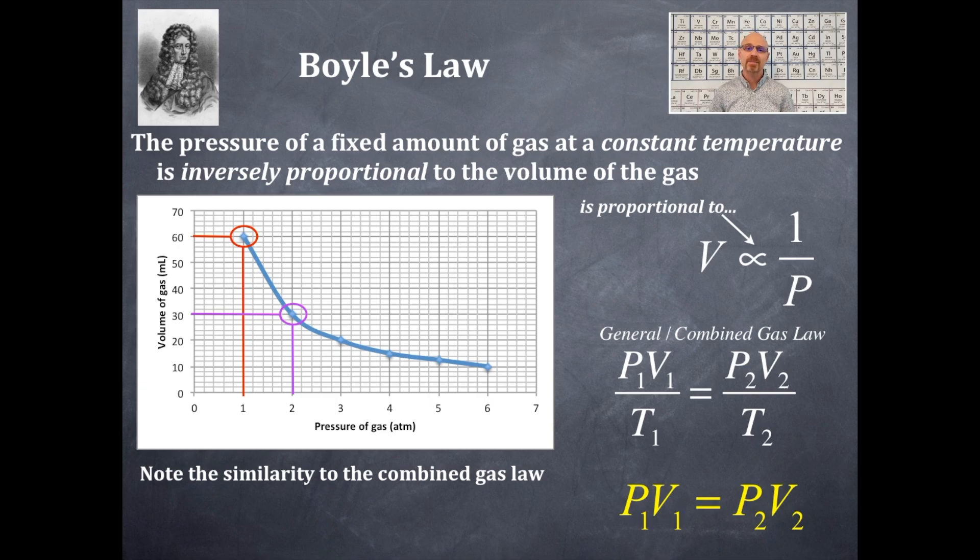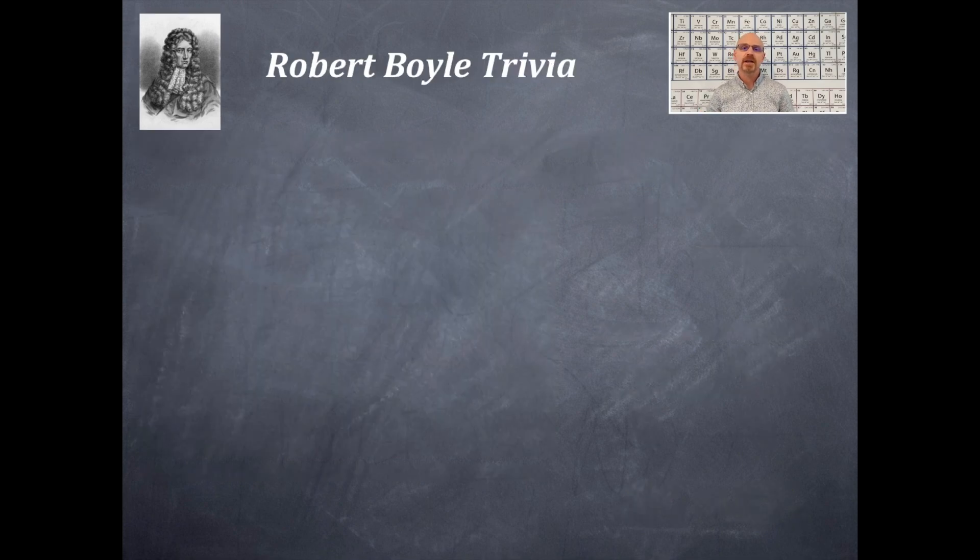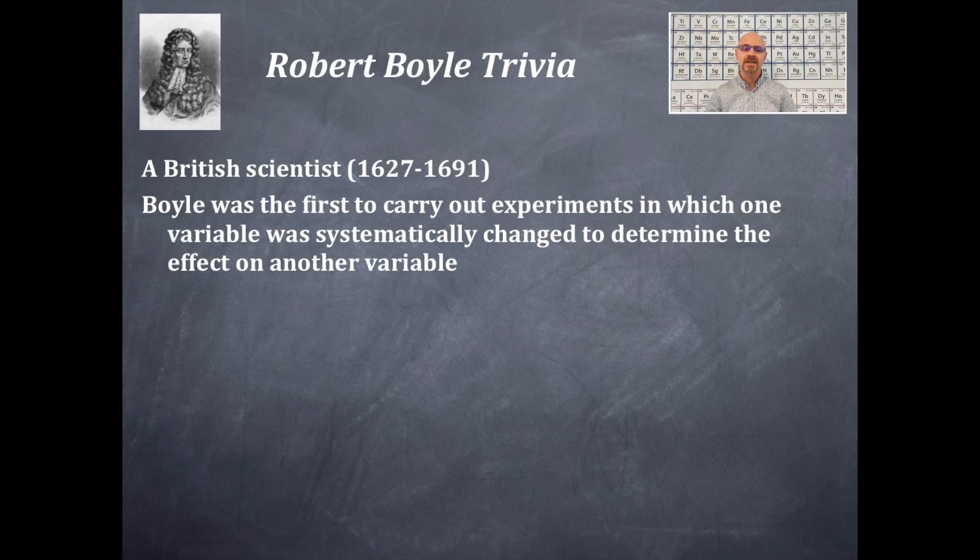That way you can derive the equation for Boyle's Law. If it's constant temperature, you can put the temperature values in there if you wanted to. Just recall that the temperature must be in Kelvin. So we're still not done with Boyle's Law. Here's a little bit of Boyle's Law trivia. He was a British scientist. Boyle was the first to carry out experiments in which one variable was systematically changed in order to determine the effect of another variable.